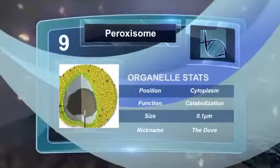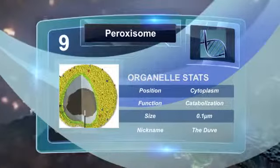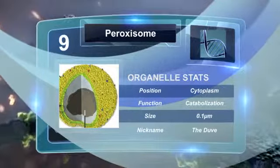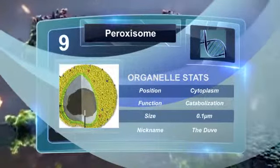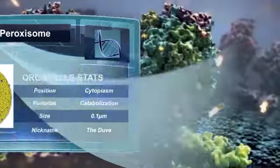Peroxisomes contain enzymes that are involved in the catabolism of a very long chain of fatty acids and other things critical for the normal function of mammalian brains and lungs.